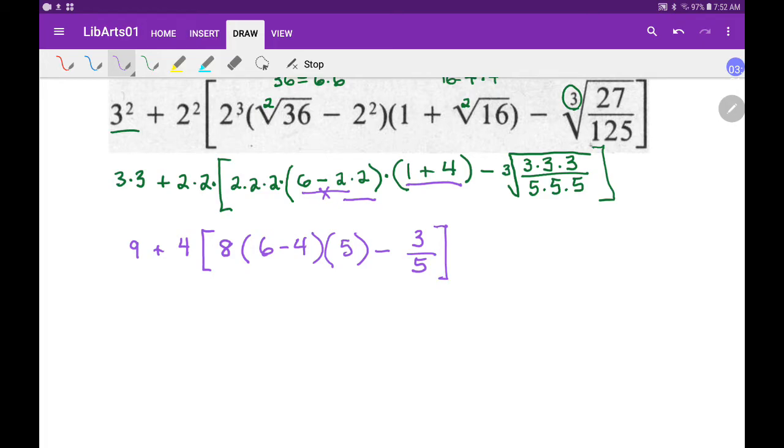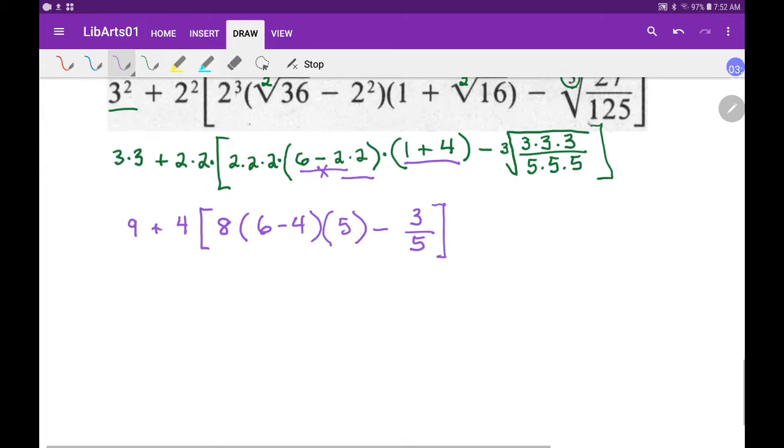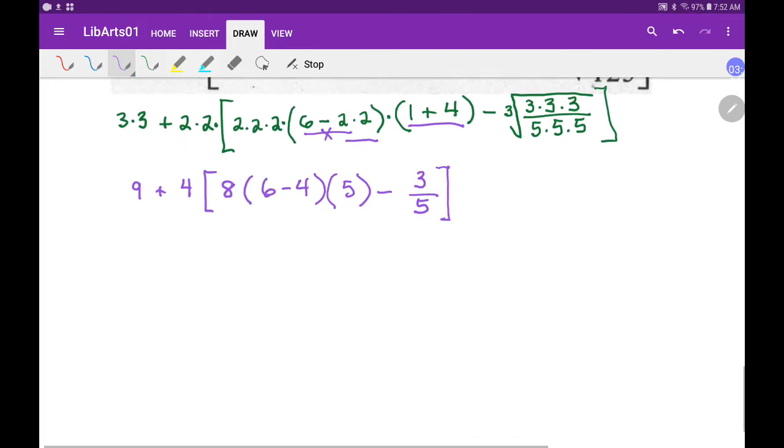Okay, so there we go, that's our new form. And let's go ahead here. Well, we better do the inside of the brackets first. So let's just focus on the brackets for right now. We'll say 8 times what's in there? There's a 2 in there, 6 take away 4, times 5, and minus 3 over 5, we'll have to do that last.